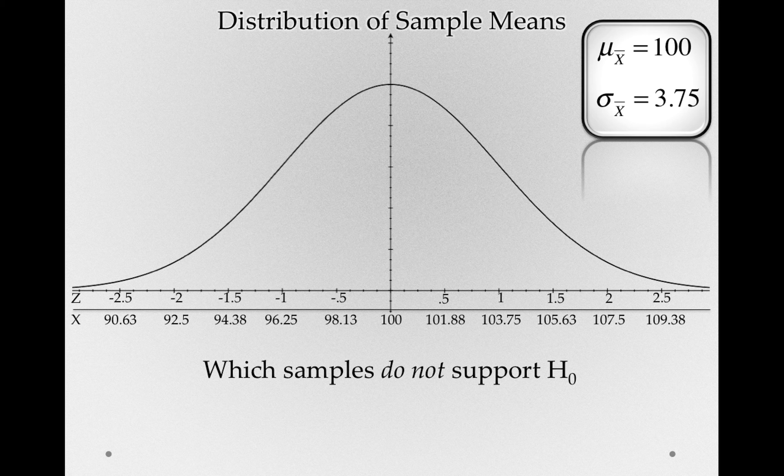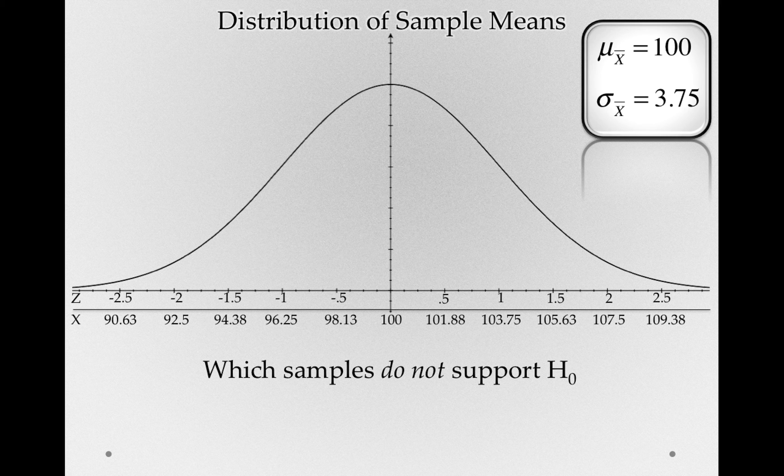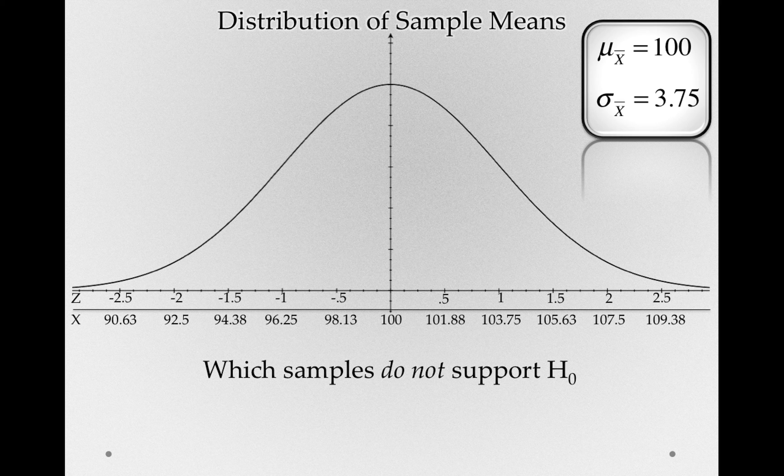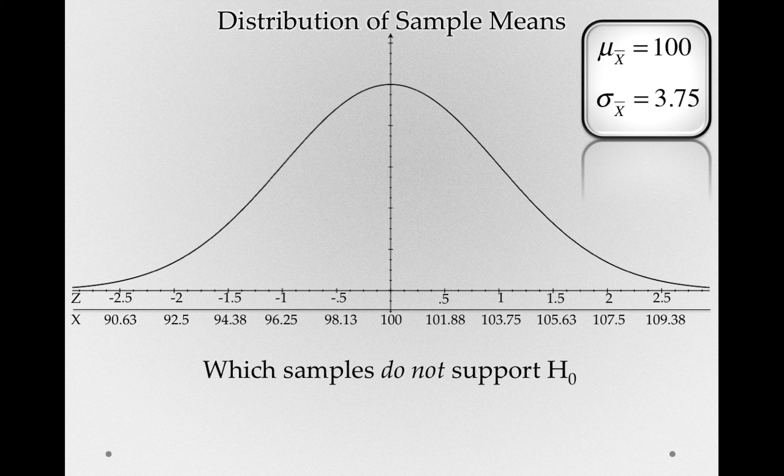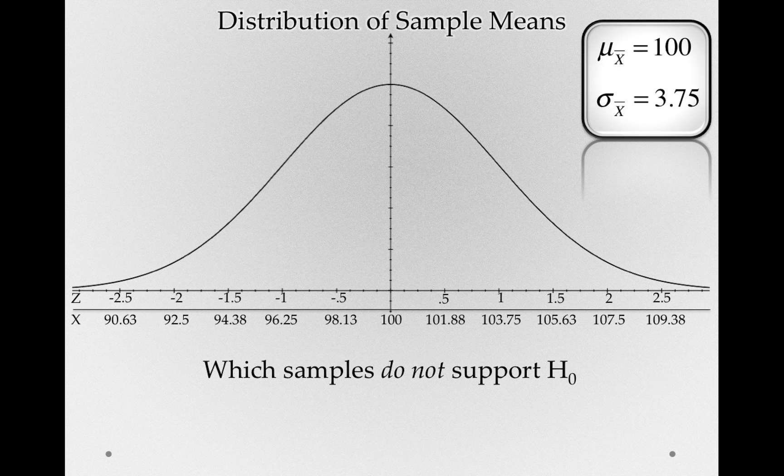Remember, the null hypothesis is claiming something very specific, that after we treat that whole population, the sample mean we're taking is coming from a population centered right at 100. I think we can all agree that a sample mean of 160, or a sample mean at 40, wouldn't support the null hypothesis. But we need to be specific about where we draw the line.